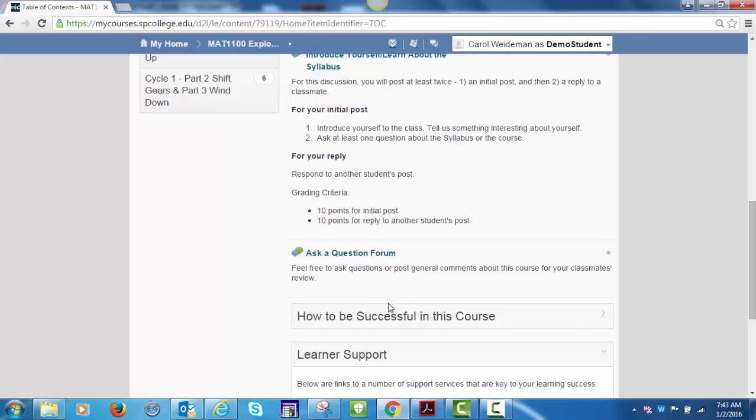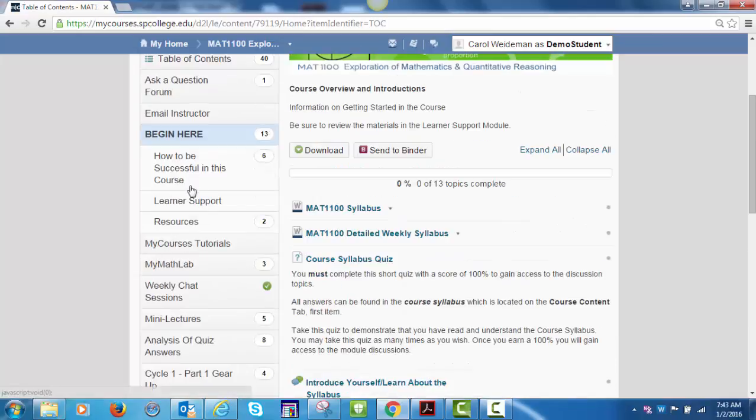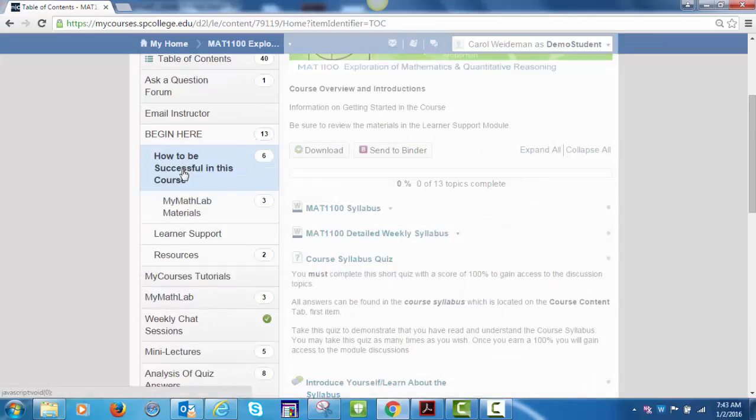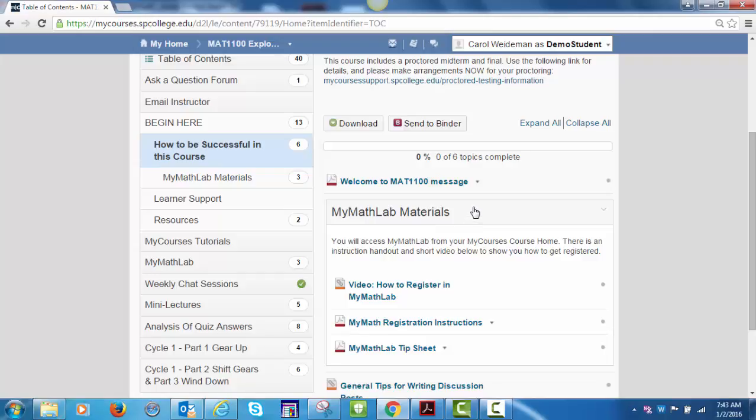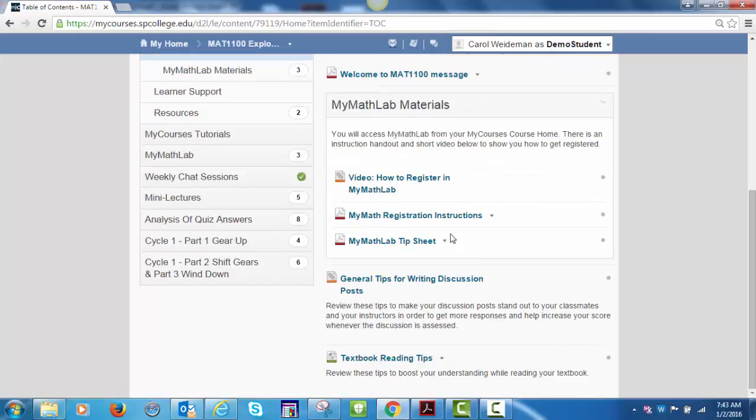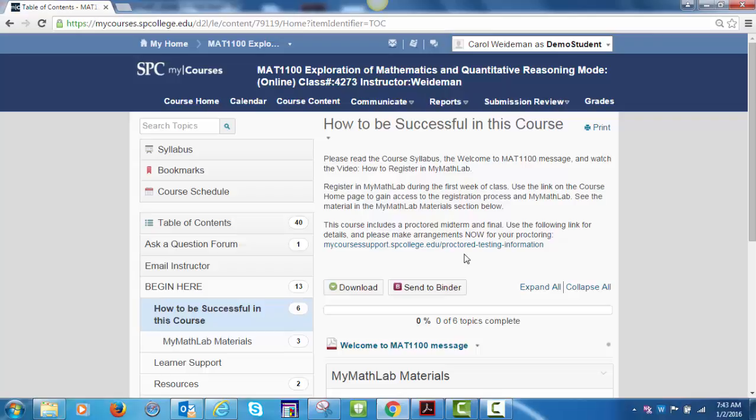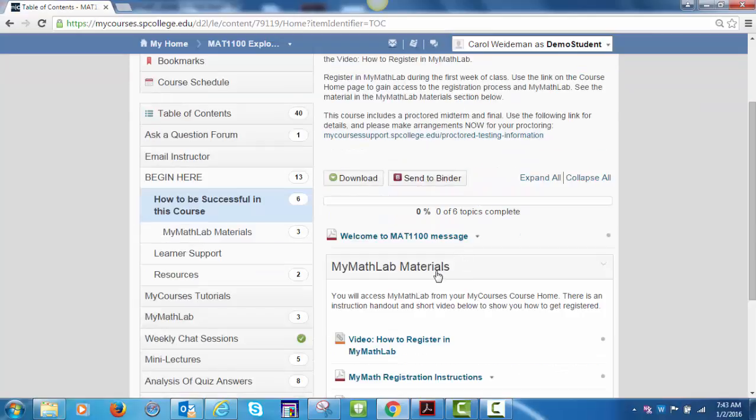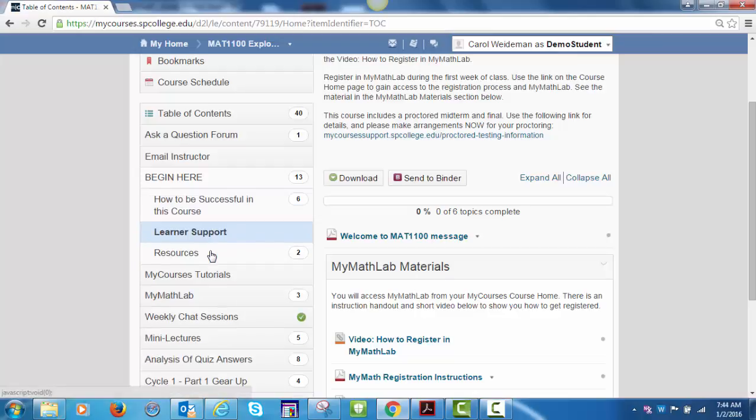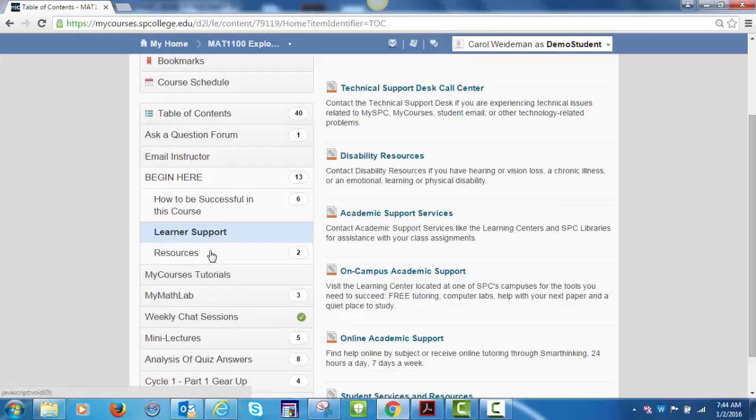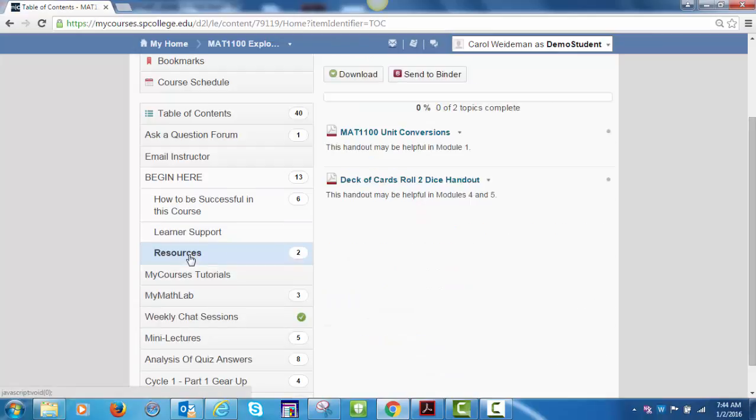Click on the sub-module, How to Be Successful in Our Course. This module contains the message you're listening to now along with the handout and information about proctored testing. The MyMathLab materials folder includes information on how to get registered for our course. The learner support module contains links to college resources, and the resources module contains handouts that will be useful during the course.